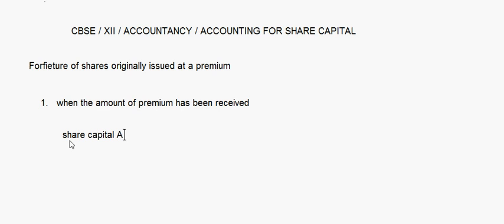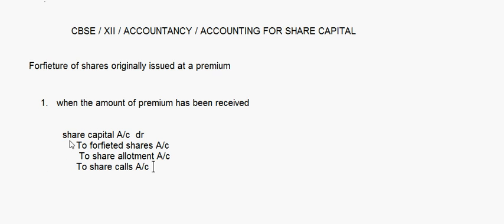In this first case, we make a normal entry as we did for shares originally issued at par. The amount of premium is already received, so you need not take that premium into consideration at all - it is as if the premium has been paid. You take the value of the share at face value only and remove the premium. The entry will be: Share Capital Account debit, to Forfeited Shares Account, to Share Allotment Account, to Share Calls Account.